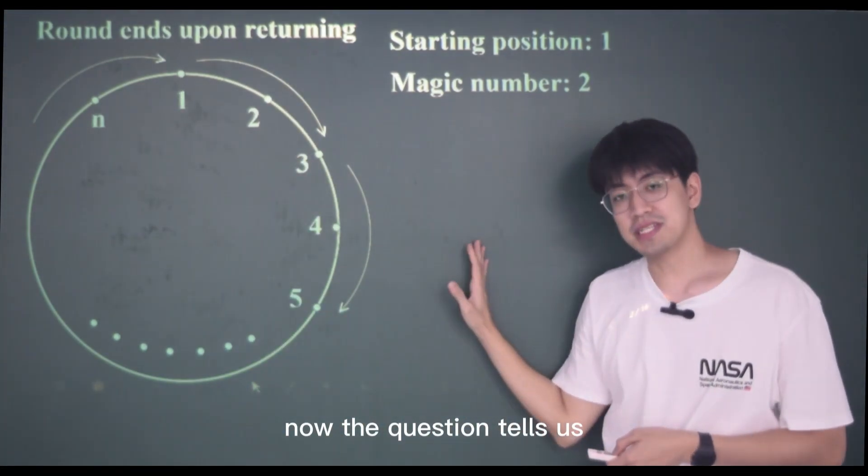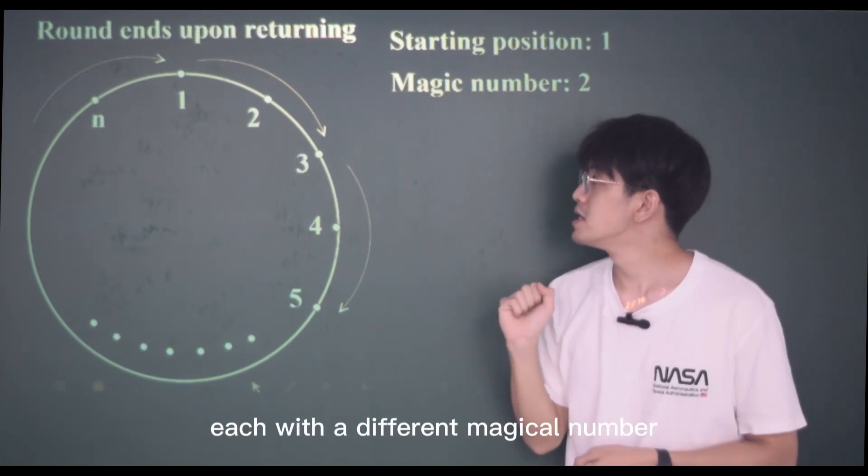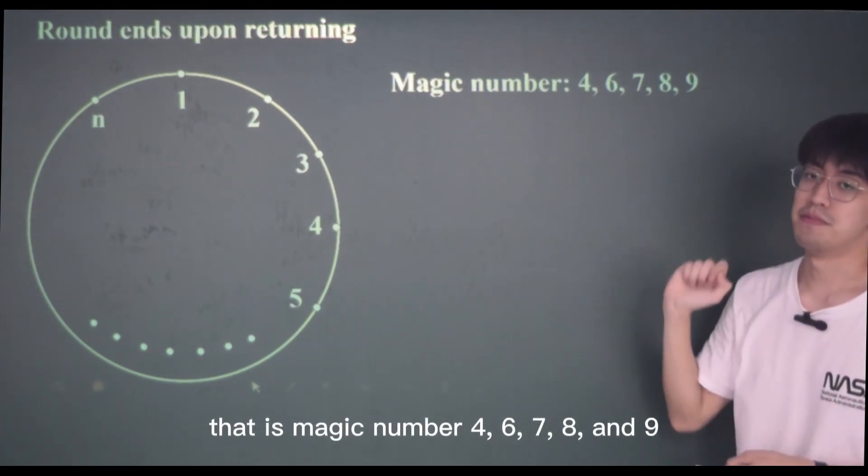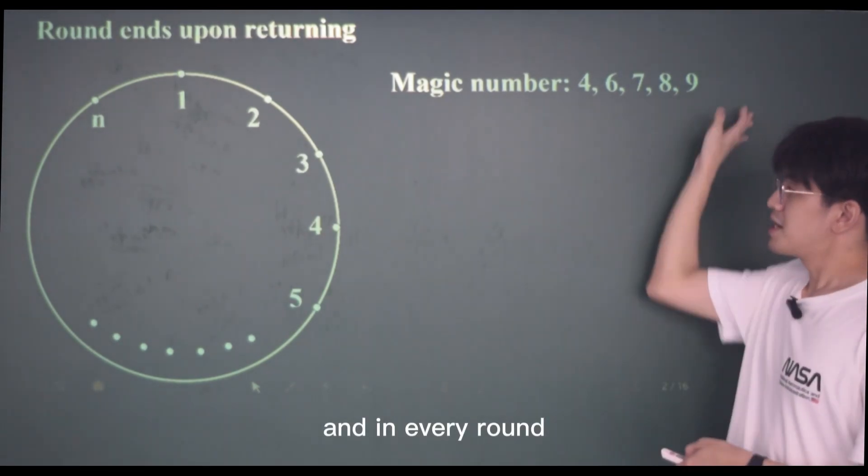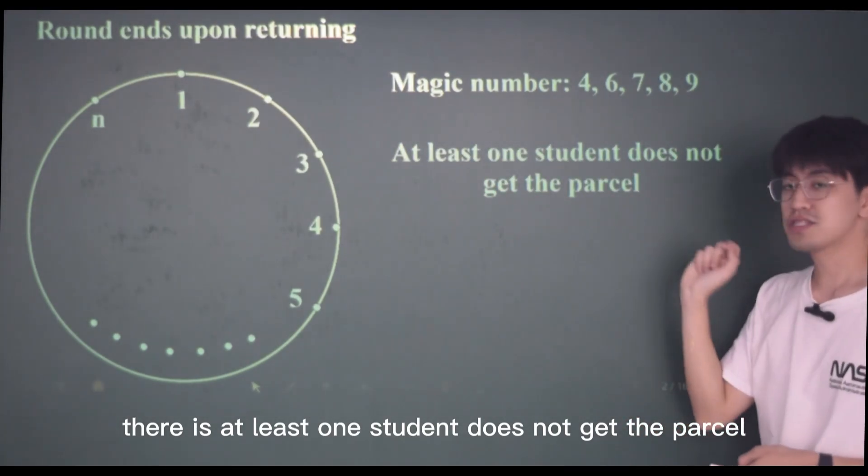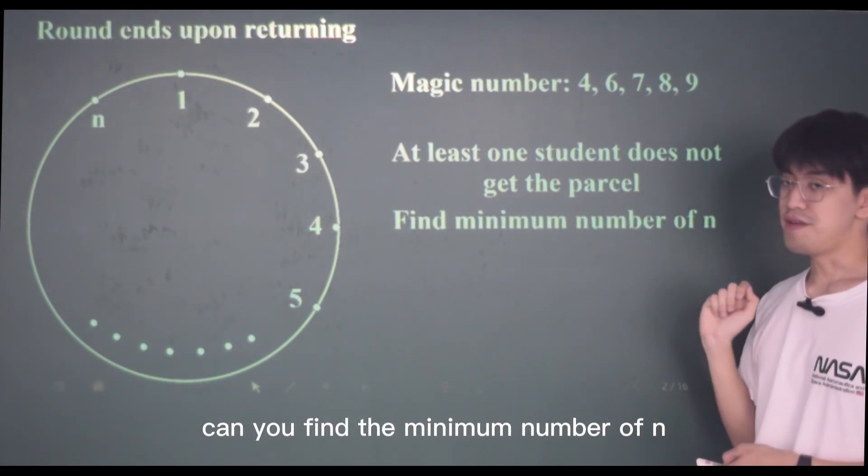The question tells us that this game was played five times, each with a different magical number: magic number four, six, seven, eight, and nine. And in every round, there is at least one student who does not get the parcel. Can you find the minimum number of N?